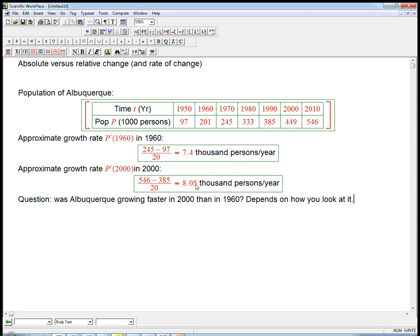But if we look at it as a percentage of the population, this was 7,400 people per year coming, sort of moving to the city, out of 200,000. Here, it's a slightly bigger number, 8,050 people, but out of a much bigger number, 449,000.